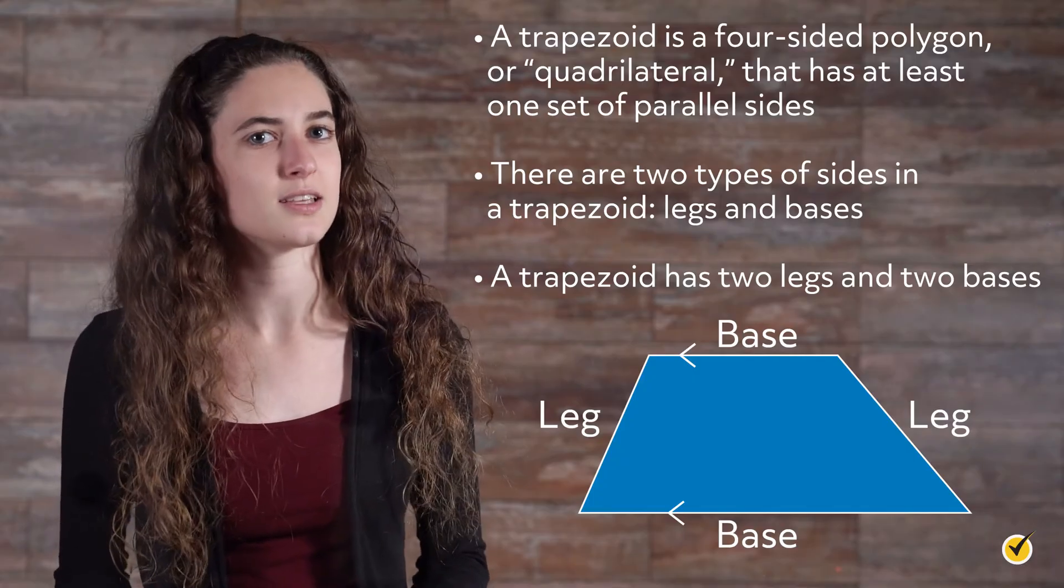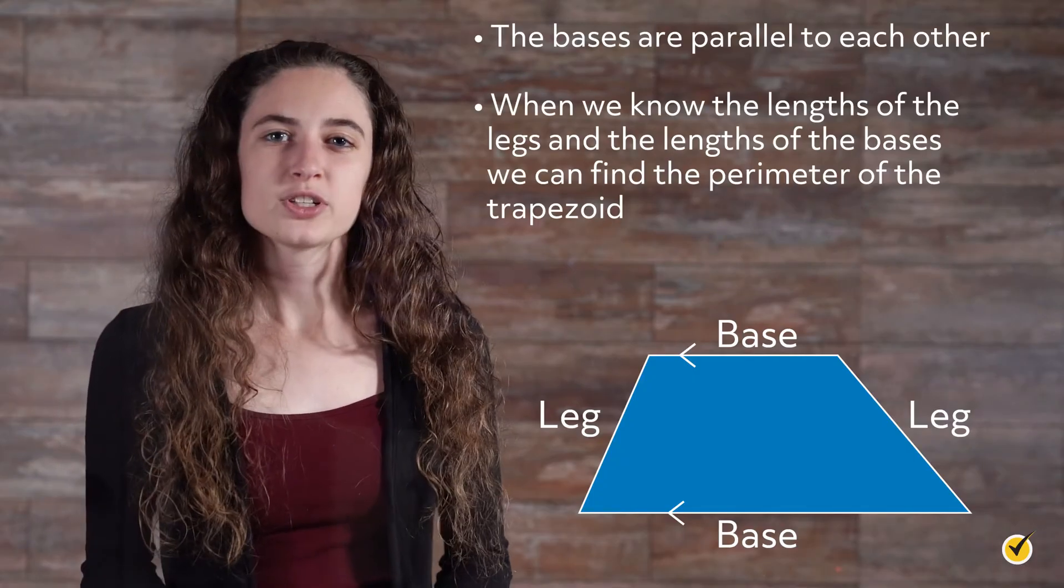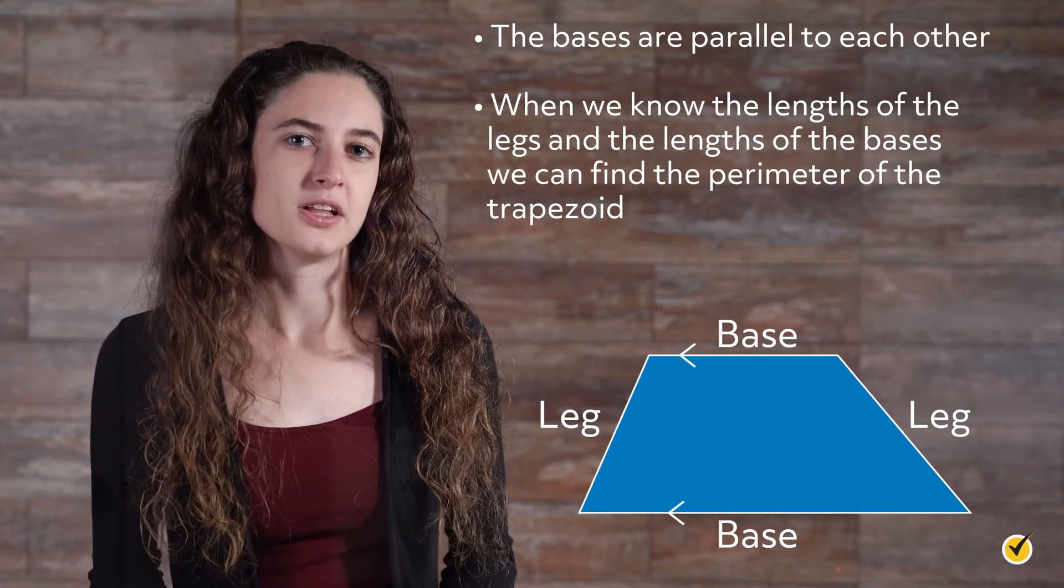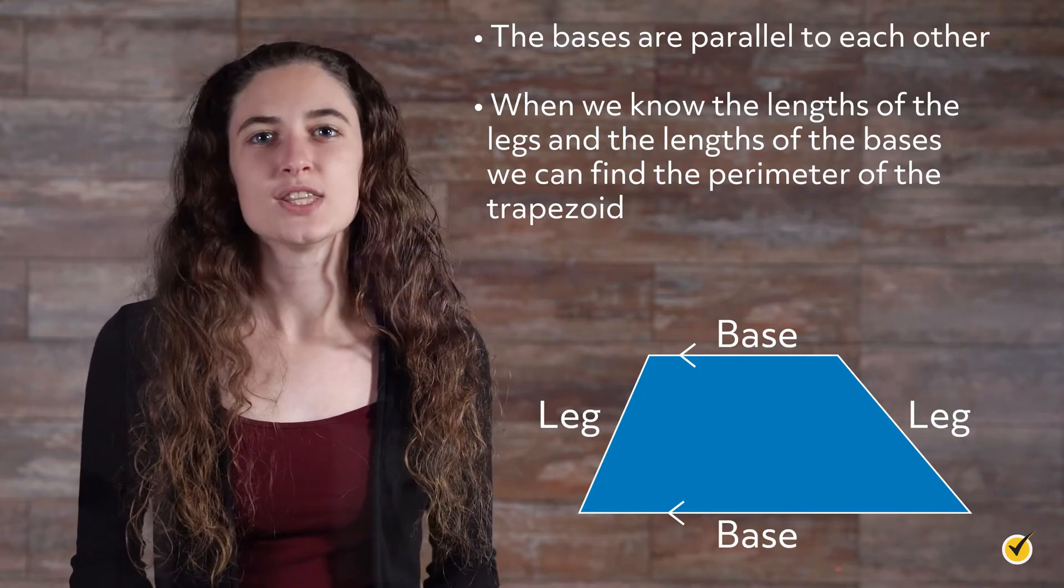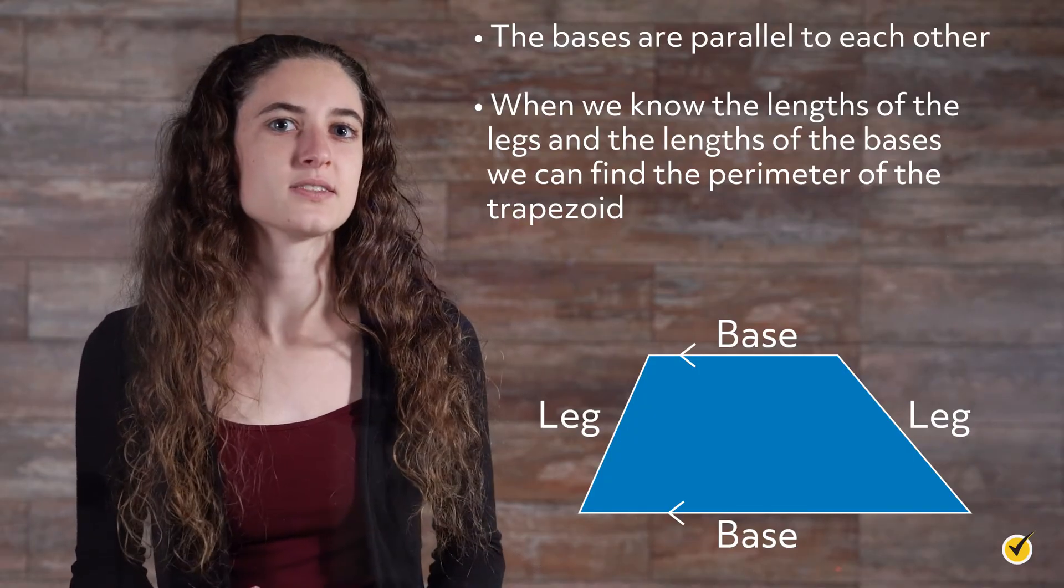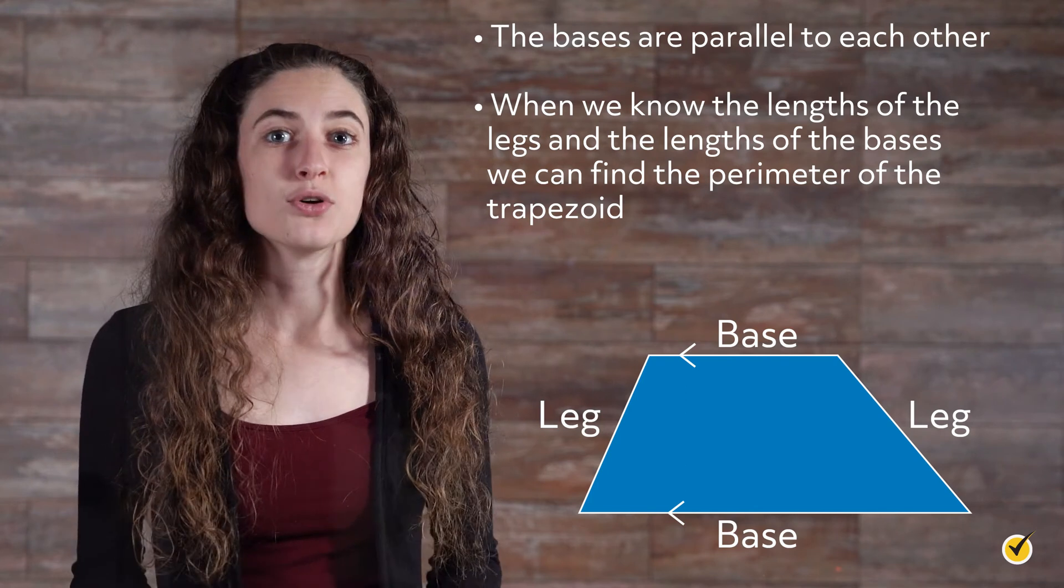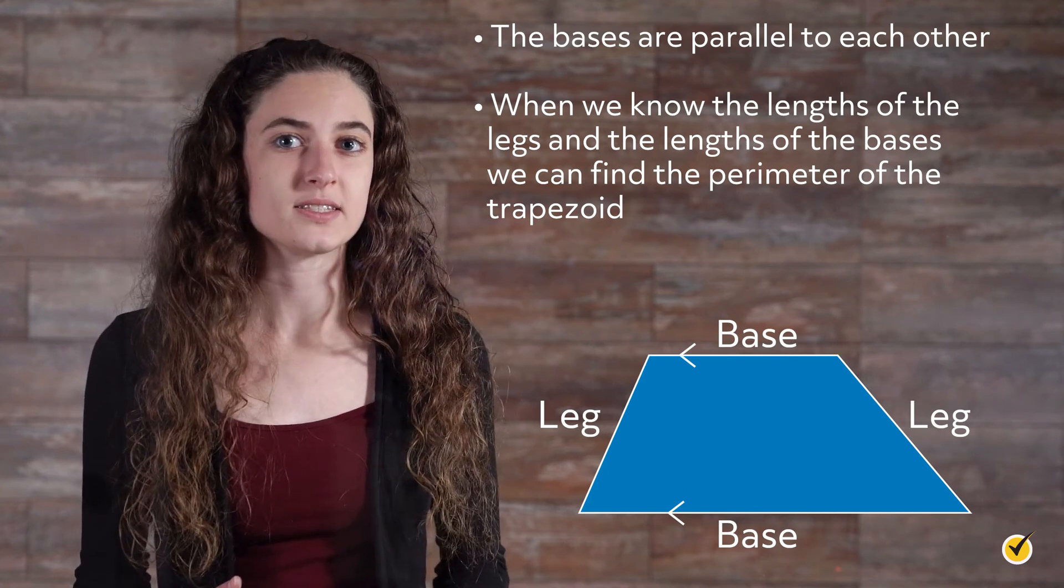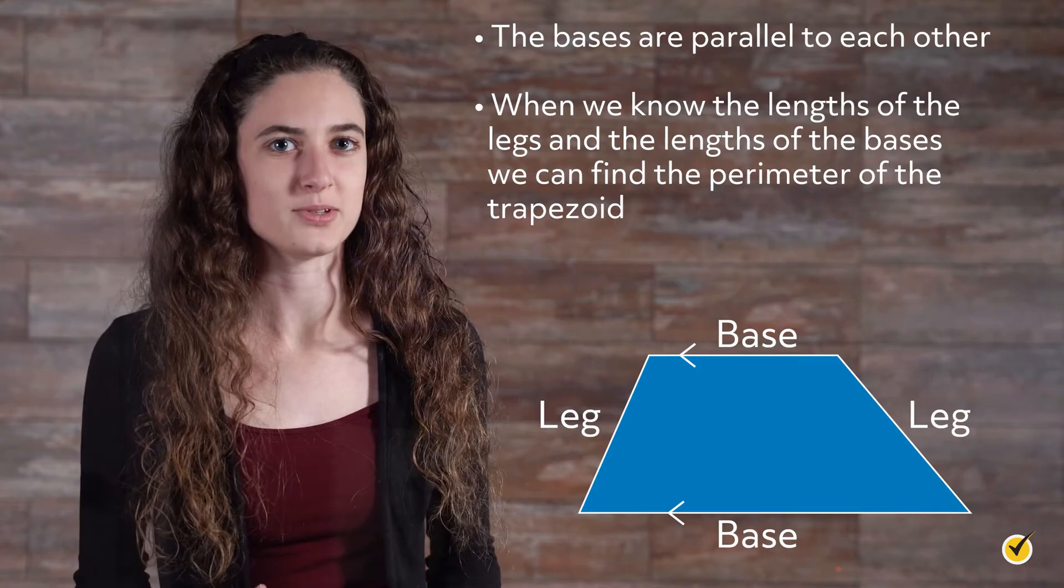A trapezoid has two legs and two bases. We can tell which sides are the bases because they are parallel to each other. Here we can see the top and bottom are parallel because of the matching arrows on those sides. When we know the lengths of the legs and the lengths of the bases, we can find the perimeter of the trapezoid.